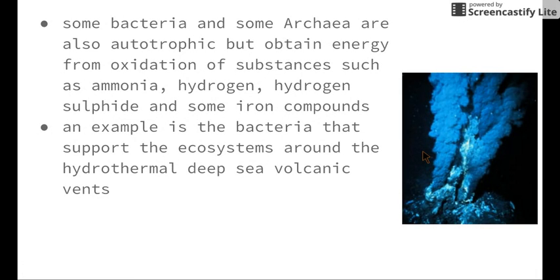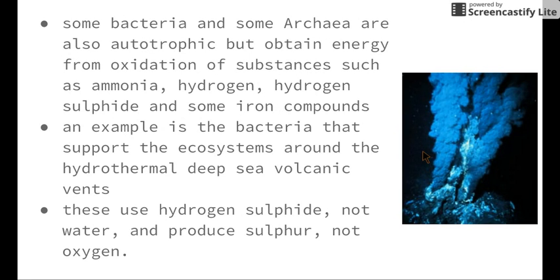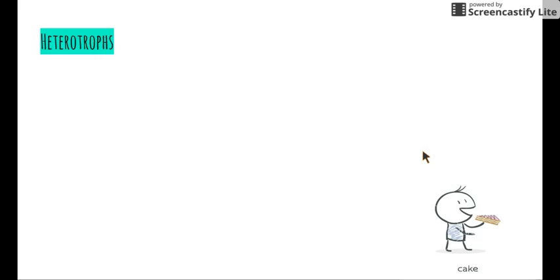At a volcanic vent deep below the ocean, it's in complete darkness, so photosynthesis isn't possible as there's no energy from the sun. These bacteria have adapted to their environment and obtain energy in other ways. In particular, they use hydrogen sulfide instead of water to produce sulfur instead of oxygen. Hydrogen sulfide and sulfur have quite a strong smell, and deep in these hydrothermal vents it's very hot — this process of creating energy is sufficient for these organisms to survive.